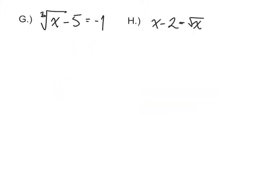In part G, we have a cubed root, but still, the principle is the same. Get the cubed root alone by adding 5. Then, to get rid of a third root, take it to the third power. x is equal to 64.